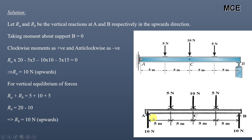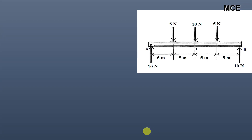Both Ra and Rb are pointing upward, each with a magnitude of 10 N. Since the loading is symmetric, Ra and Rb are equal to half the total load. Total load is 20 N, so Ra = Rb = 10 N. For vertical equilibrium, Ra + Rb = 20, confirming Rb = 10 N acting upward.